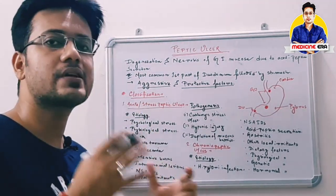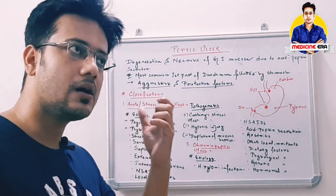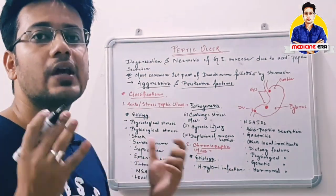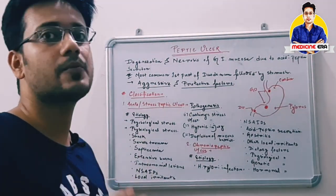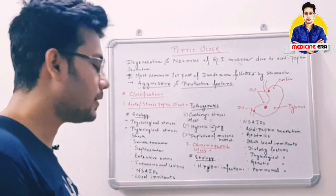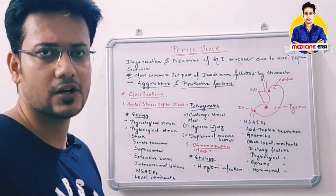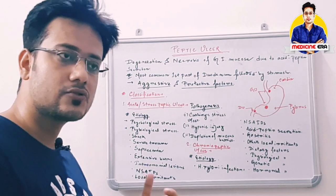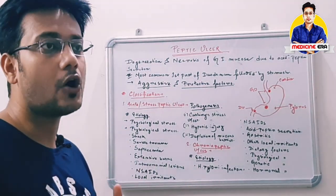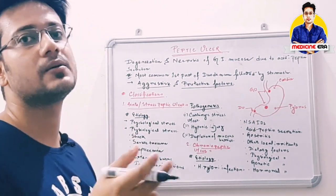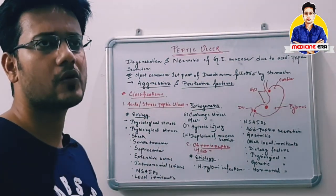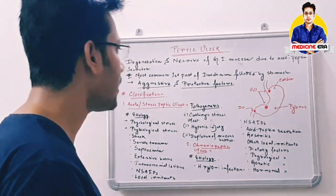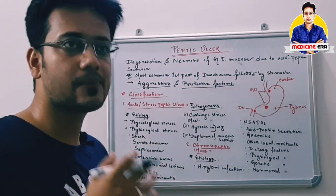NSAIDs — non-steroidal anti-inflammatory drugs — are also responsible for peptic ulcer because they inhibit prostaglandin synthesis. Prostaglandins have a role in mucus secretion, which is a protective factor. Reduced prostaglandins lead to reduced mucus secretion, ultimately causing peptic ulcer. Local irritants like smoking and alcohol also contribute to peptic ulcer formation.